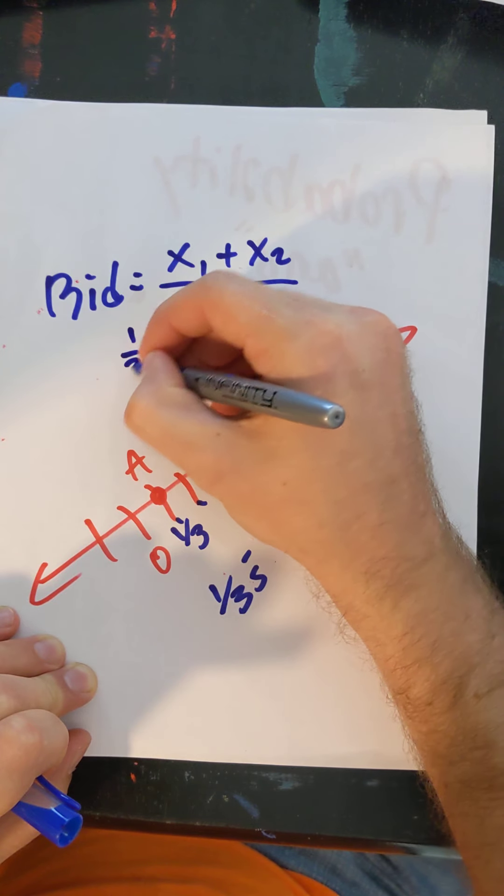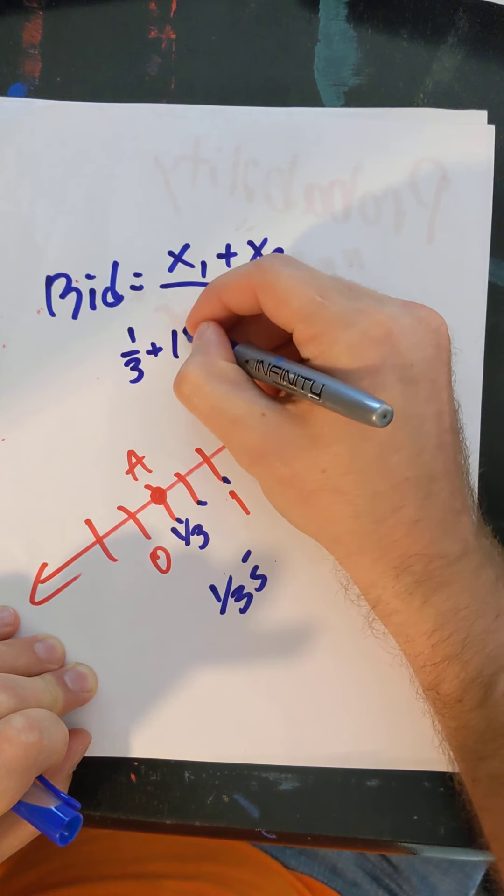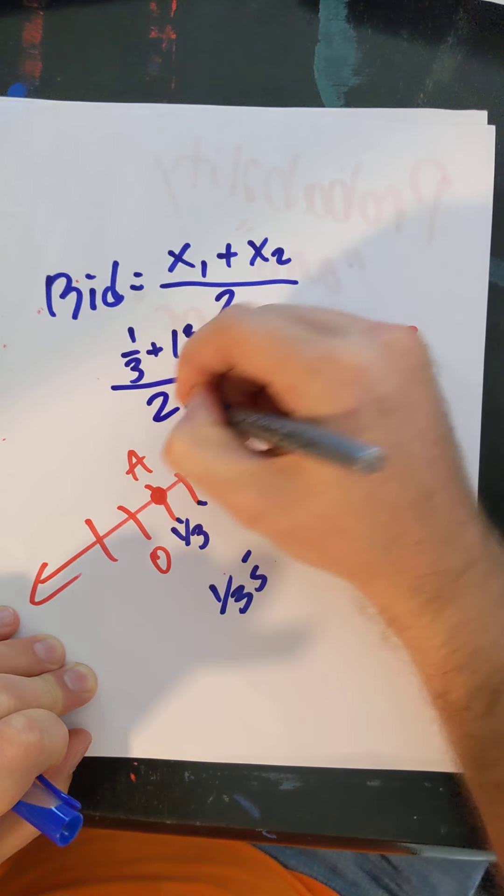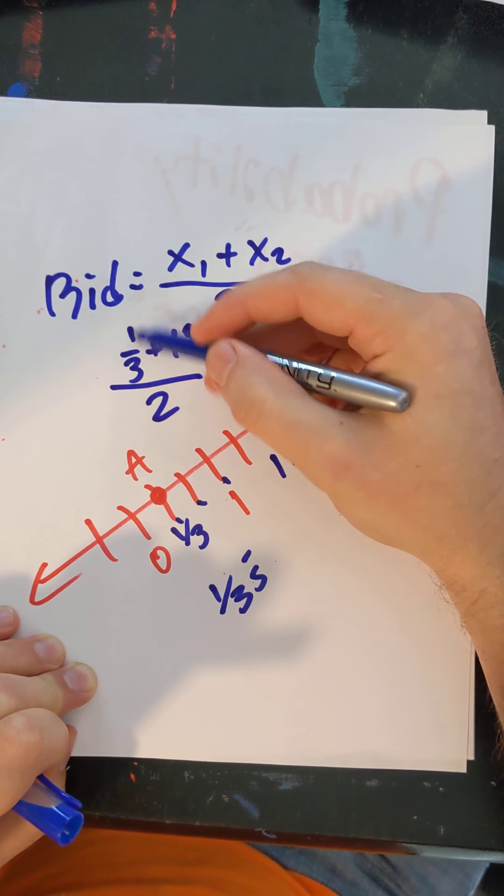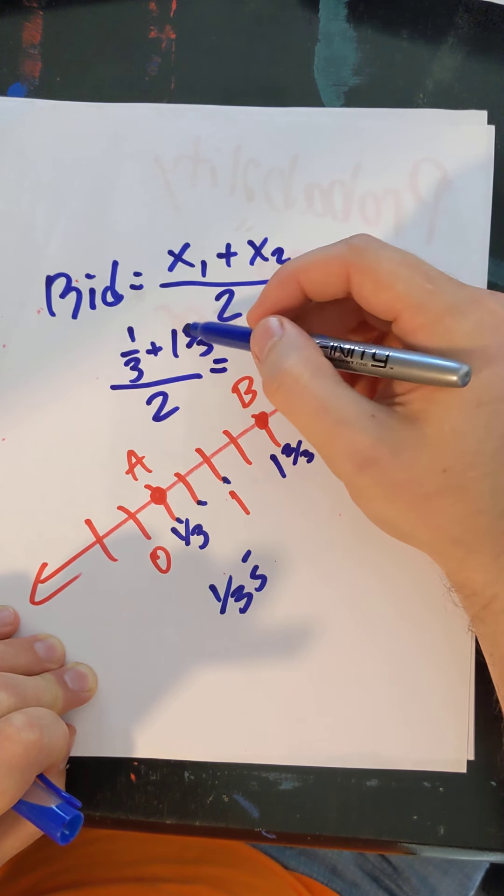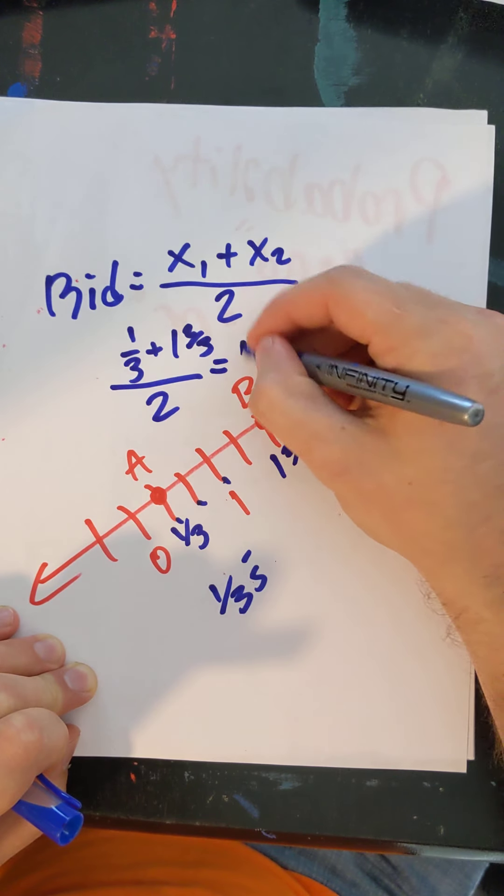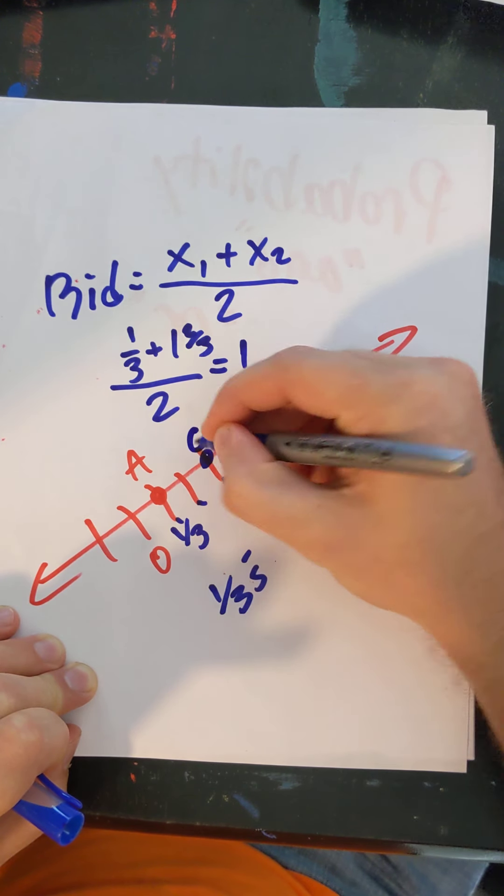So we'll have one third plus one and two thirds divided by two. One third plus one and two thirds is one and three thirds, or two, two divided by two is one. So right at one, there's our midpoint.